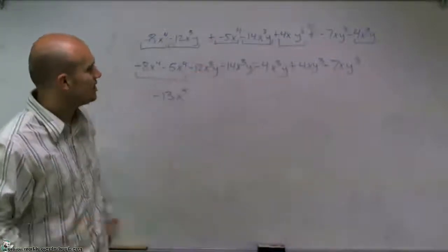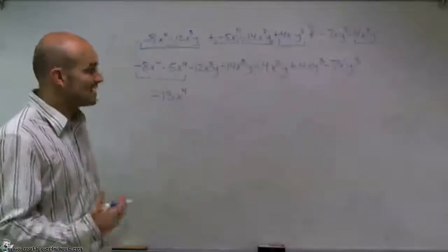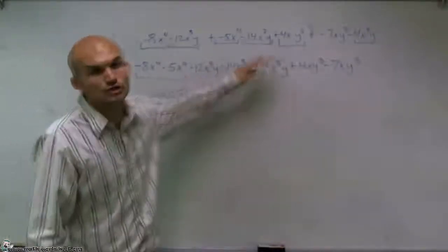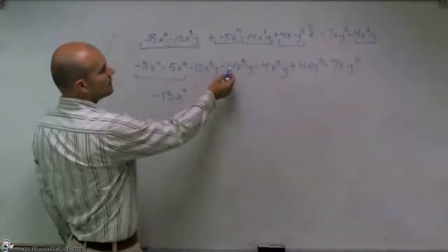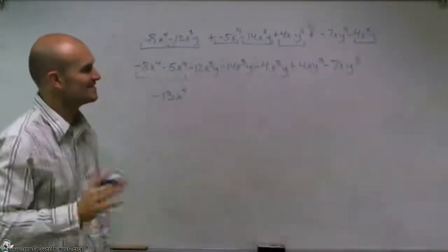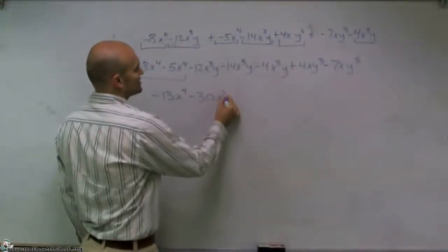Now I do negative 12x cubed y minus negative 14x cubed y minus 4x cubed y. Since all the terms are the same, I can just keep on subtracting my numbers. So negative 12 minus 14 is negative 26. Minus 4 is going to be negative 30x cubed y.